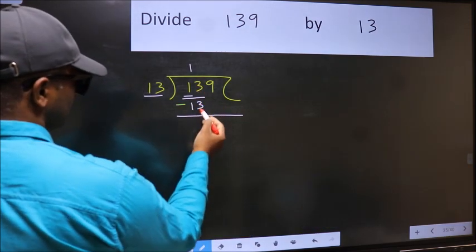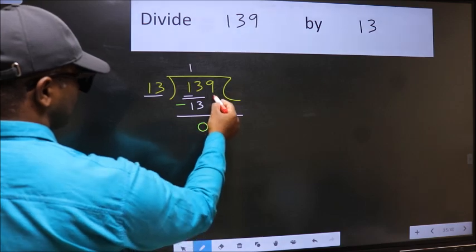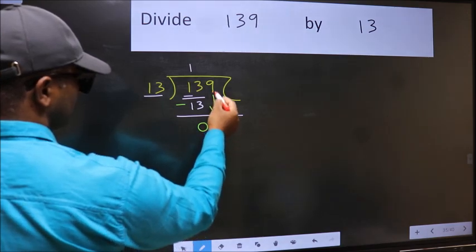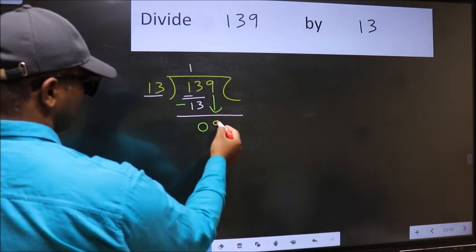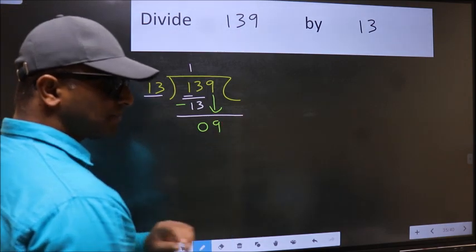After this, bring down the beside number, so 9 down. After this step, the mistake happens.